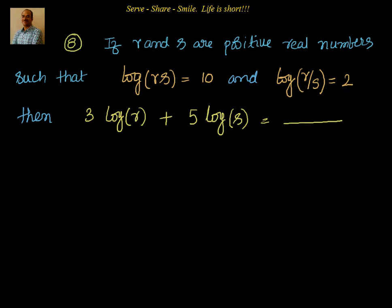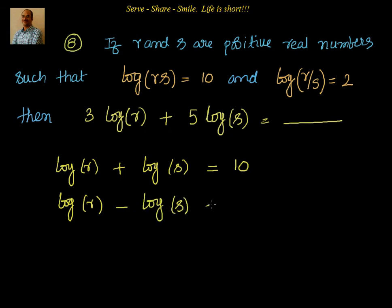We know that for logarithms, when there is a product, we can write it as an individual addition. So log of r plus log of s is equal to 10. Similarly, log of r by s division can be written as individual subtraction. So log of r minus log of s equal to 2.